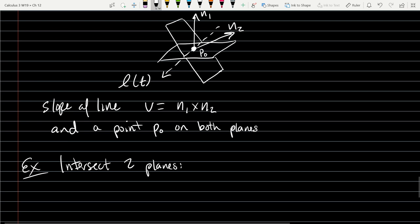So first plane: 3x minus 6y minus 2z equals 15, and 2x plus y minus 2z equals 5.